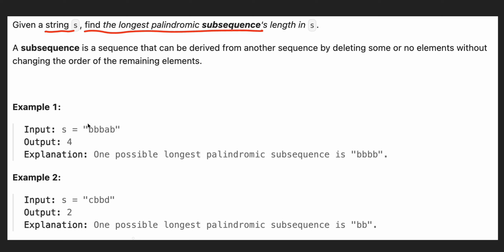For example, we have B, B, B, A, B and we are removing A. The remaining subsequence is B, B, B, B — four B's — which is the longest palindromic subsequence. By requirement we may delete some elements, but we should not change the order of the remaining elements.